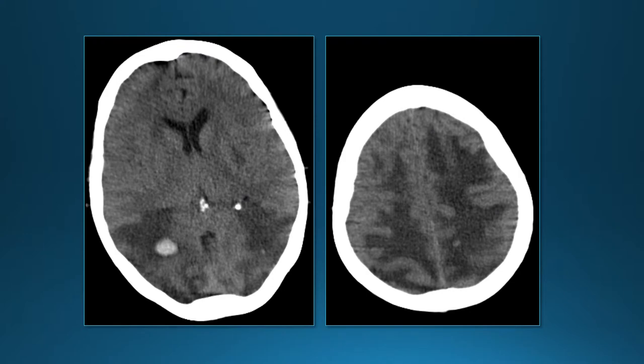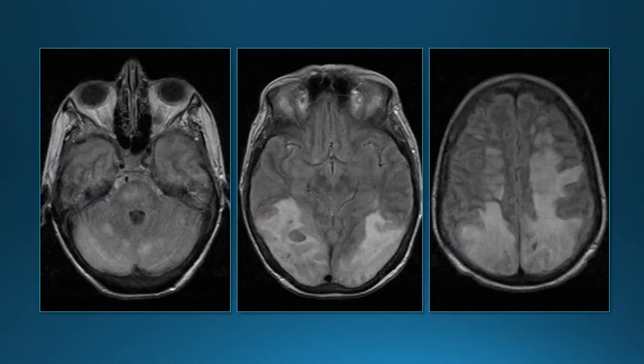Head CT shows extensive hypodensity in the subcortical white matter, with a focal area of hemorrhage. MRI FLAIR images show extensive hyperintense signal in subcortical white matter, also gray matter, tending to involve the posterior parts of the brain and posterior fossa.